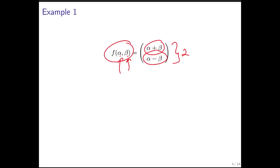So how would you evaluate this? Well, let's look at an example. If we want to evaluate f of minus 2, 1, then all we do is substitute minus 2 in for alpha, and substitute 1 in for beta.